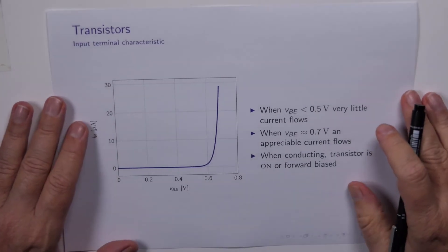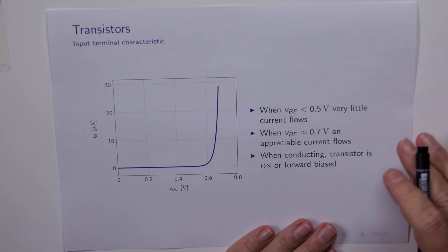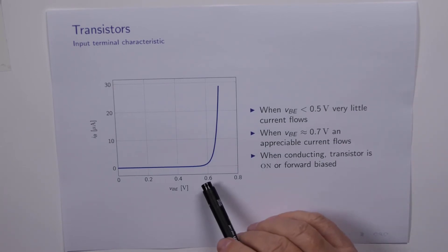Now this graph will look quite familiar, and it looks suspiciously like the graph for the real diode, and that's because they're essentially identical.